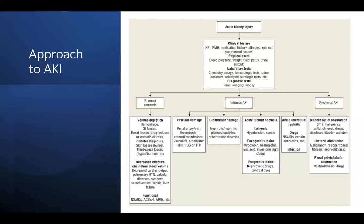Post-renal AKI is anything that obstructs the kidney. BPH is probably the most common in elderly males. Other causes include medications causing bladder dysfunction and urethral obstruction — often external compression from a mass. To have significant AKI from ureteral obstruction, it usually needs to be bilateral unless the person has a solitary functioning kidney. Stones can also obstruct.